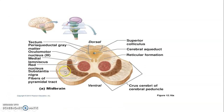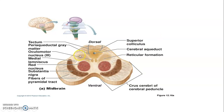The substantia nigra has a dorsal pars compacta which contains melanin and an anterior pars reticulata which contains iron. This is the red nucleus of the midbrain. If you see the oculomotor nucleus and red nucleus, you know this is a cross-section of the midbrain at the level of the superior colliculus.